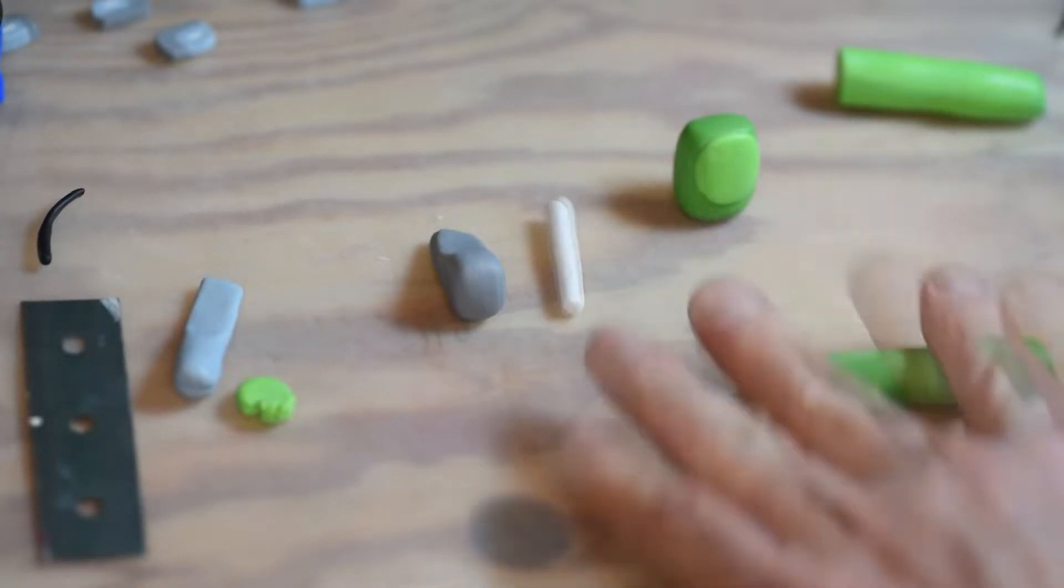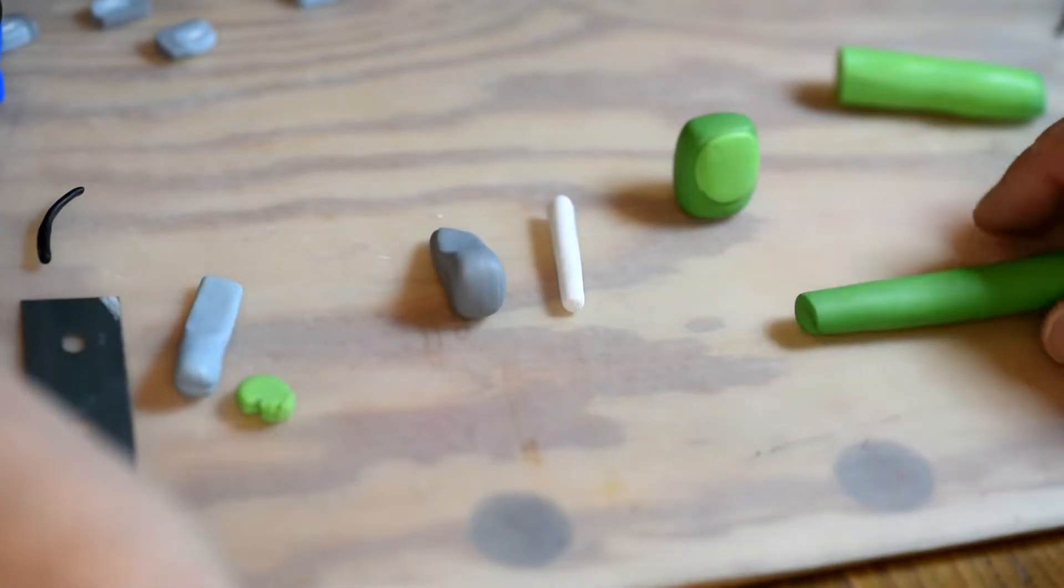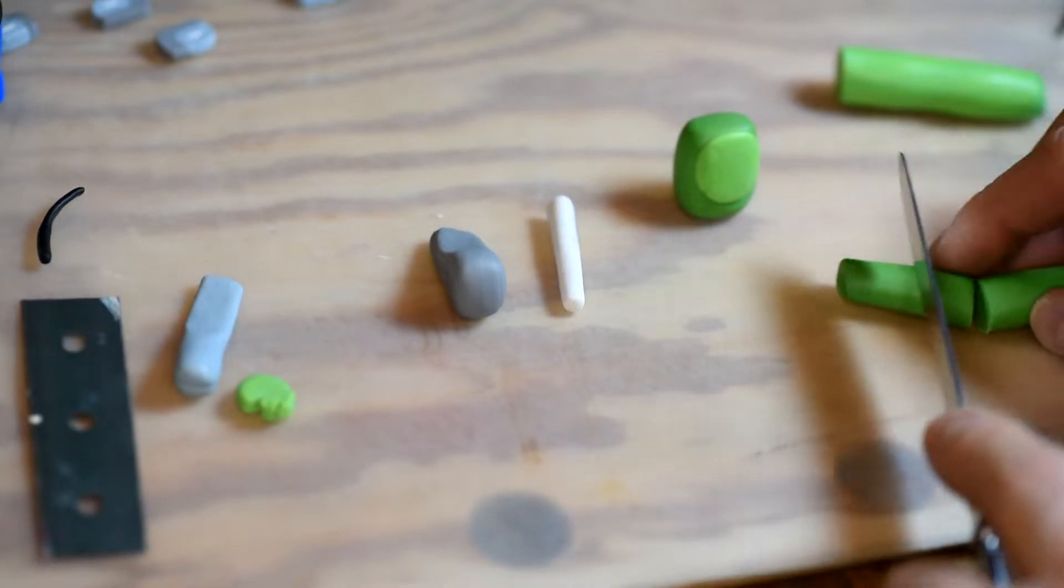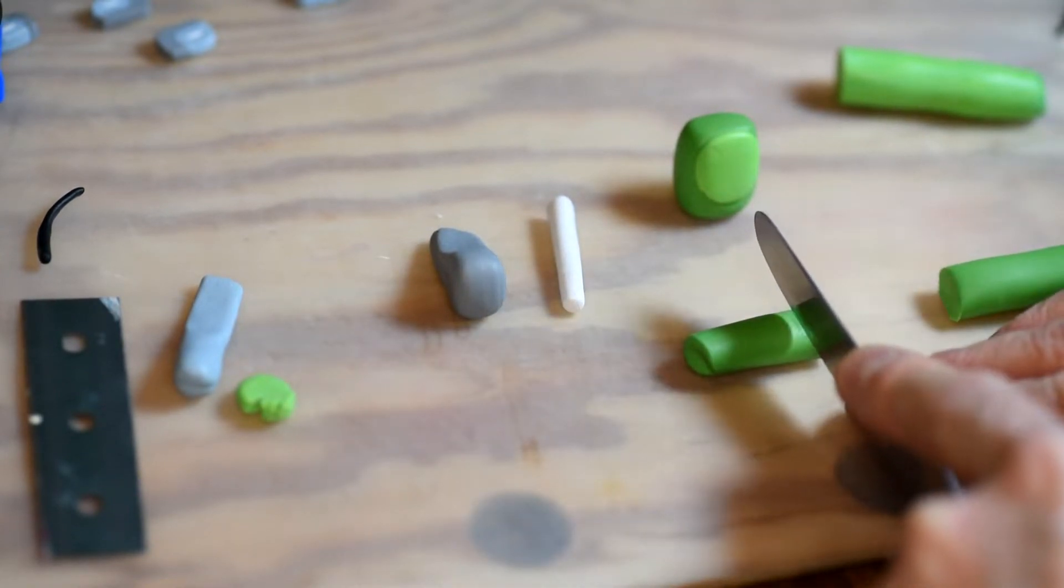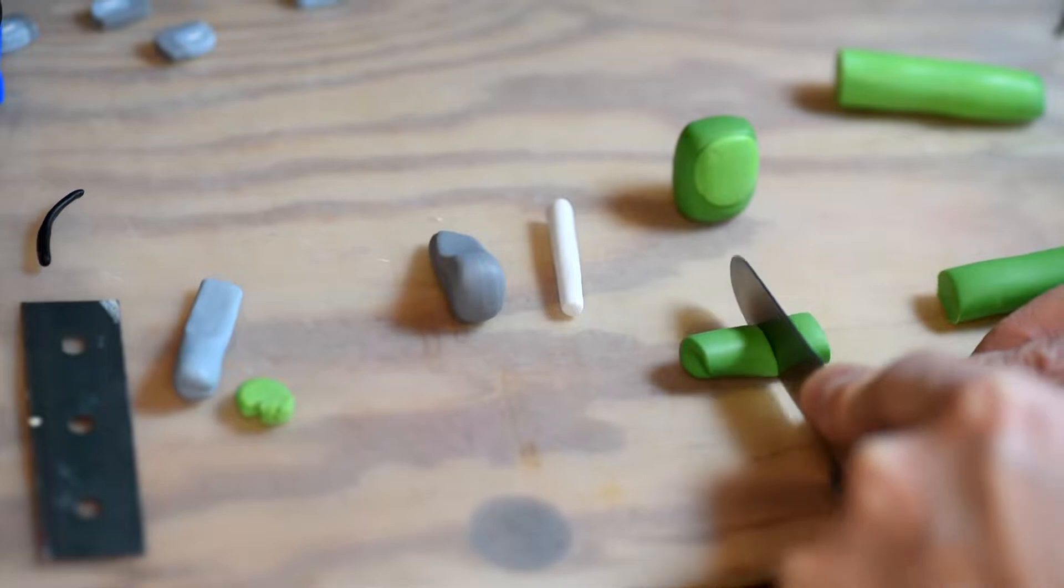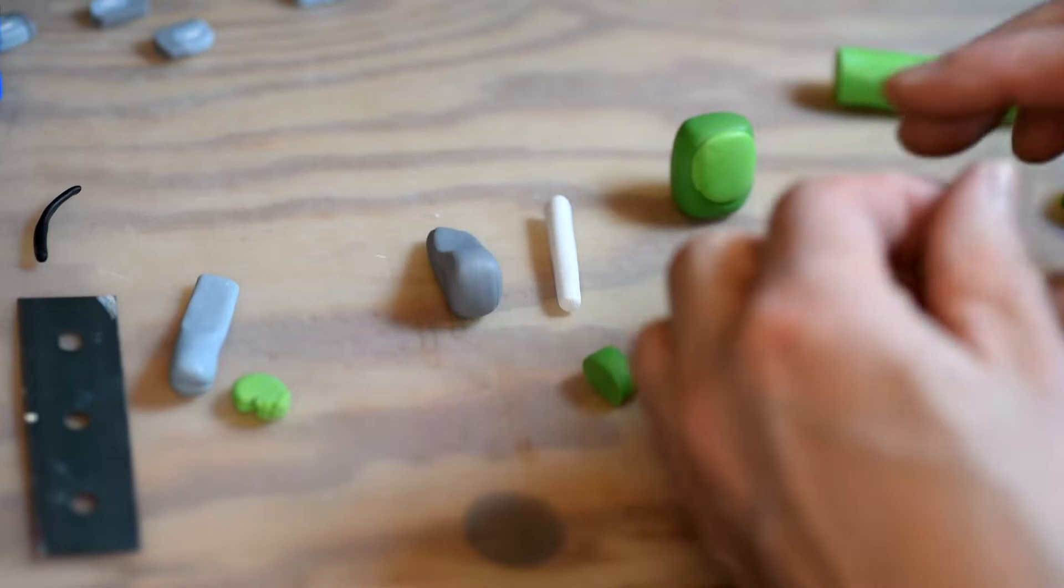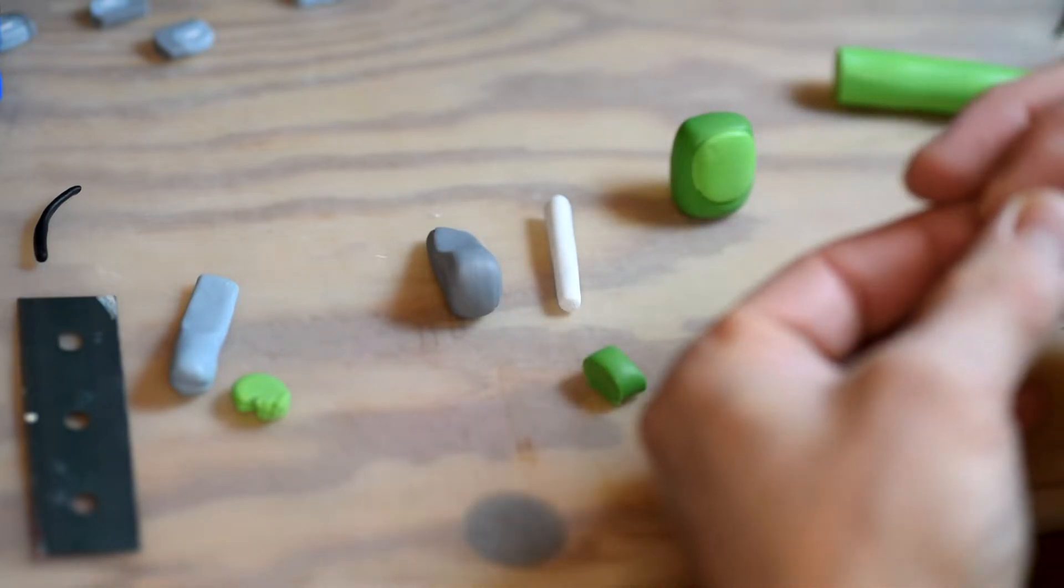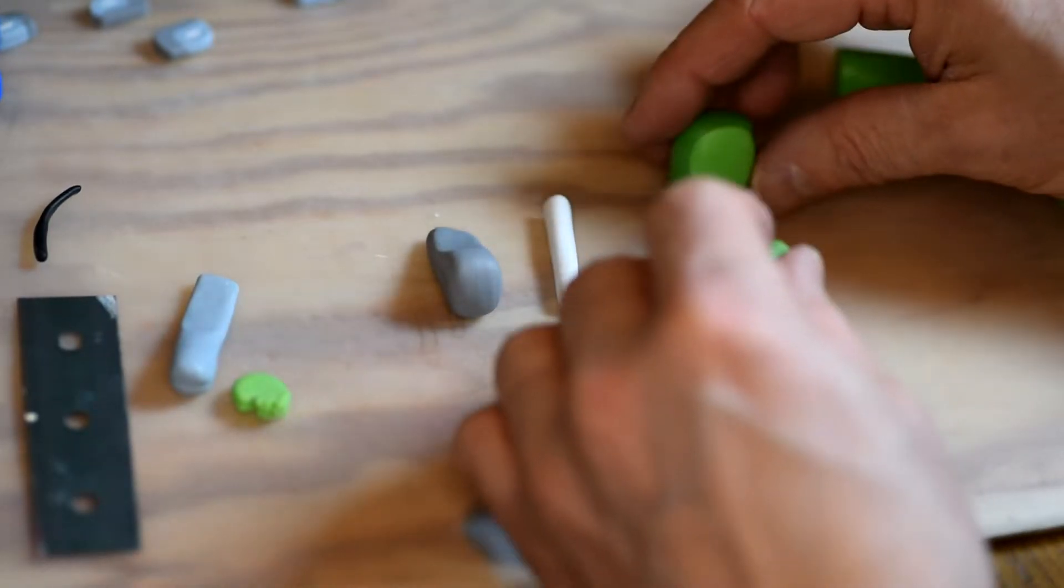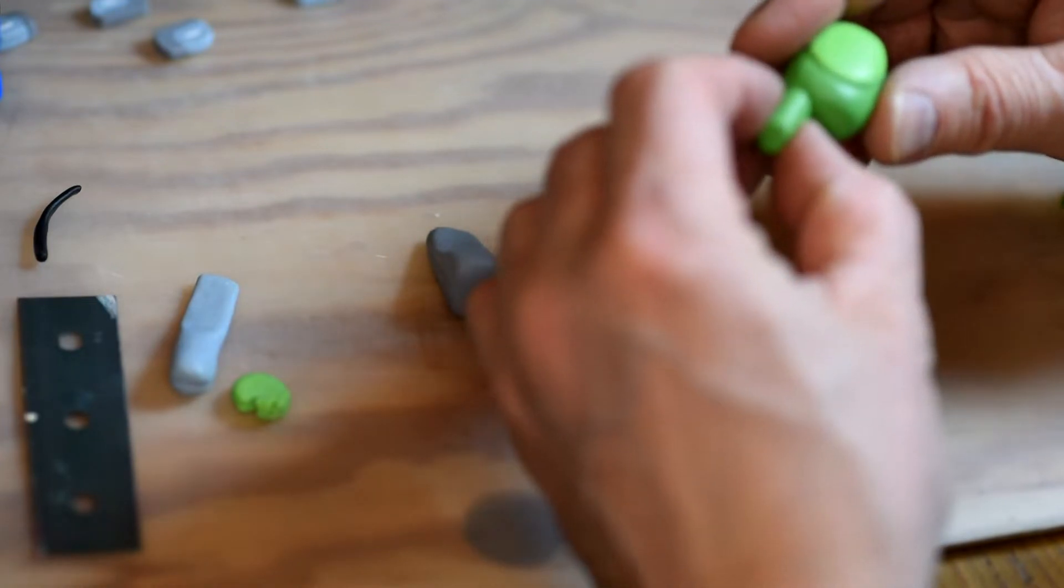Now we need two legs and a backpack. Try to make the legs the same size. Roll them between your fingers and place them under the body.